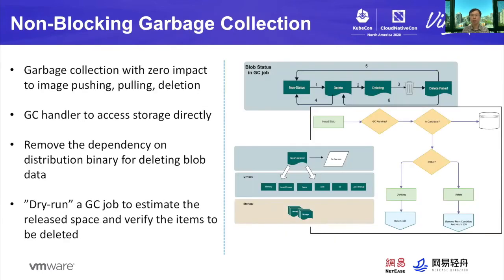When artifacts are deleted from a registry, their storage space needs to be released and reclaimed. This process is called garbage collection. System administrators should perform garbage collection periodically to ensure the system does not run out of storage space. In the latest Harbor 2.1 release, garbage collection is improved and can be performed without any impact on image pushing, pulling, and deletion, allowing Harbor to keep providing artifact service while doing background garbage cleanup.